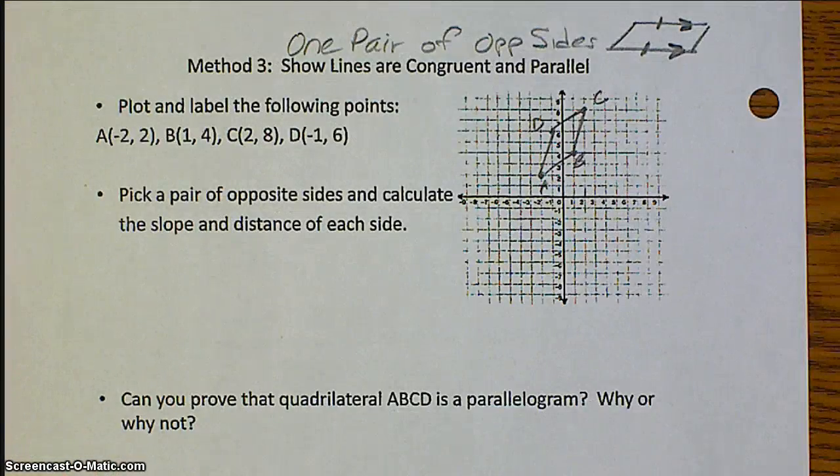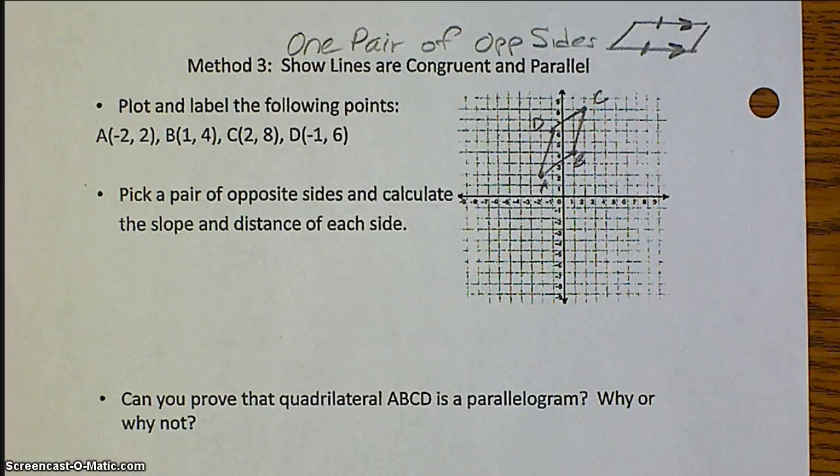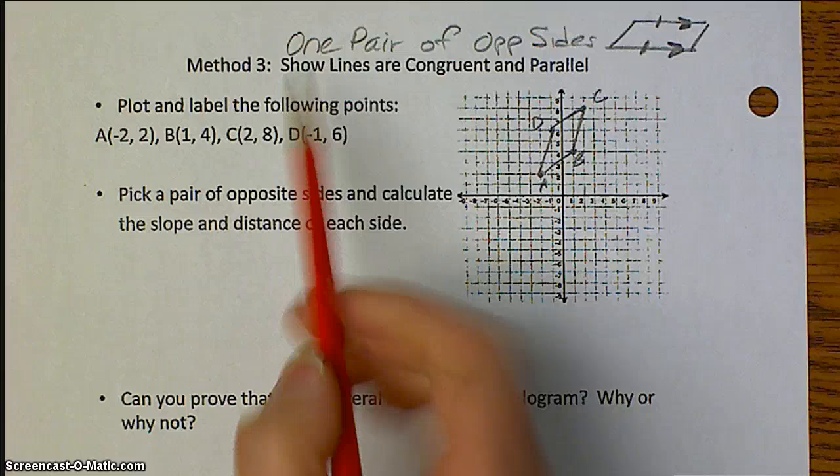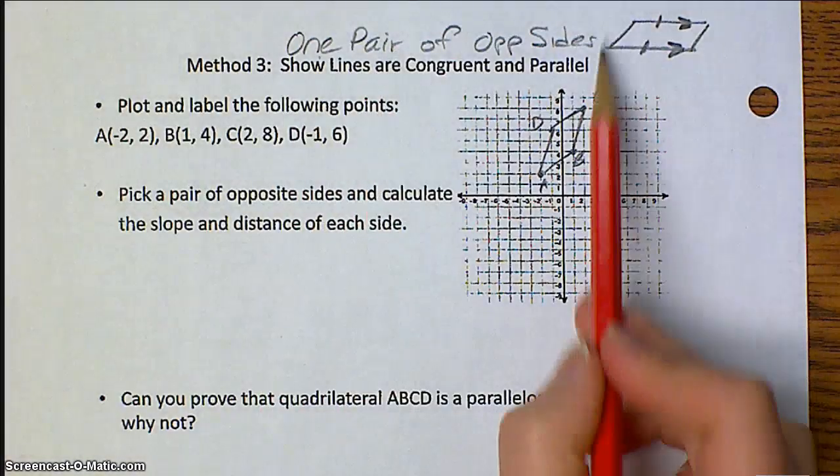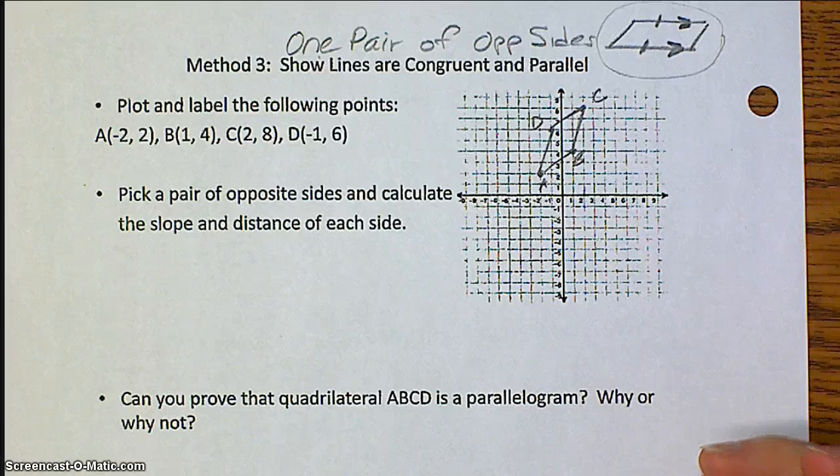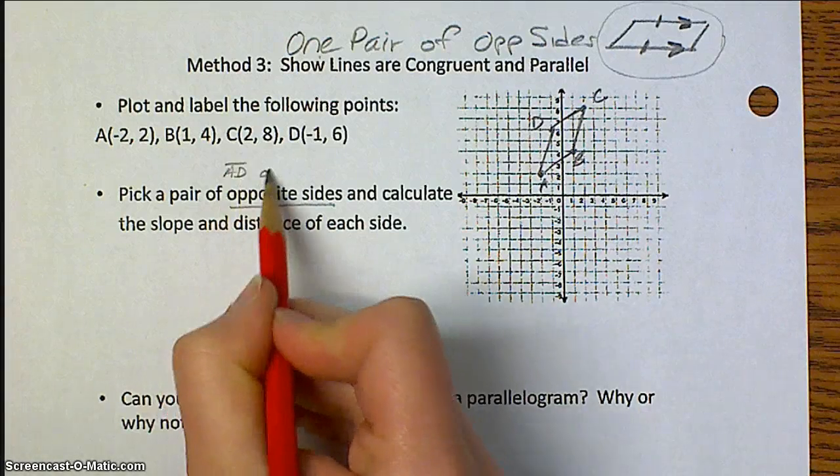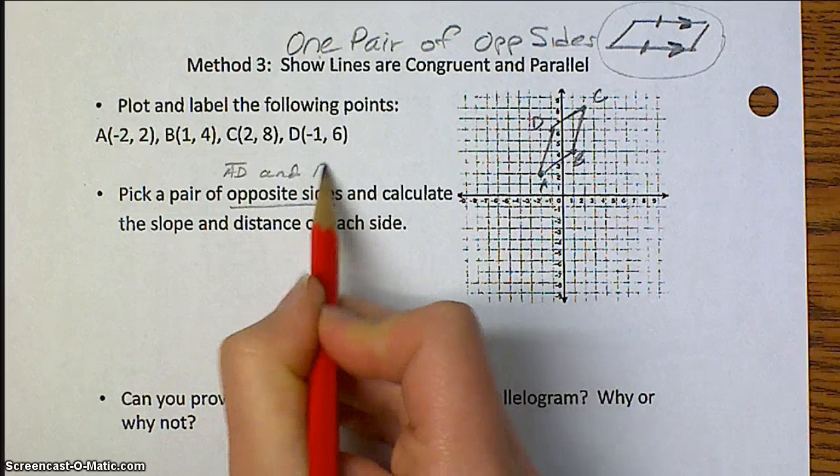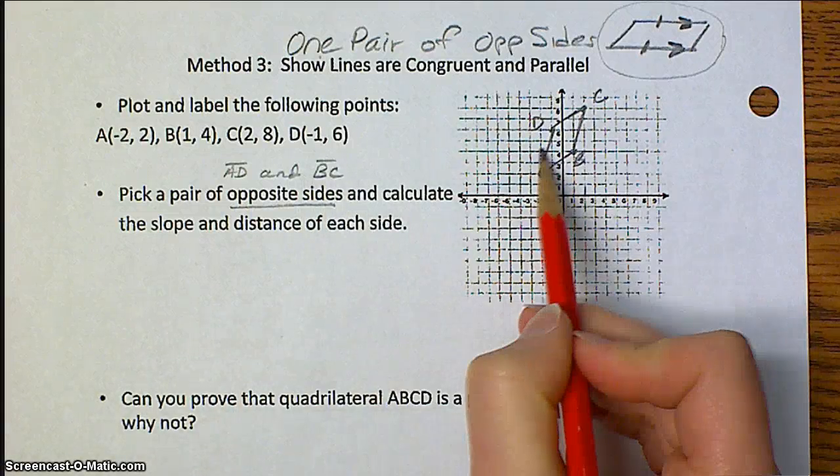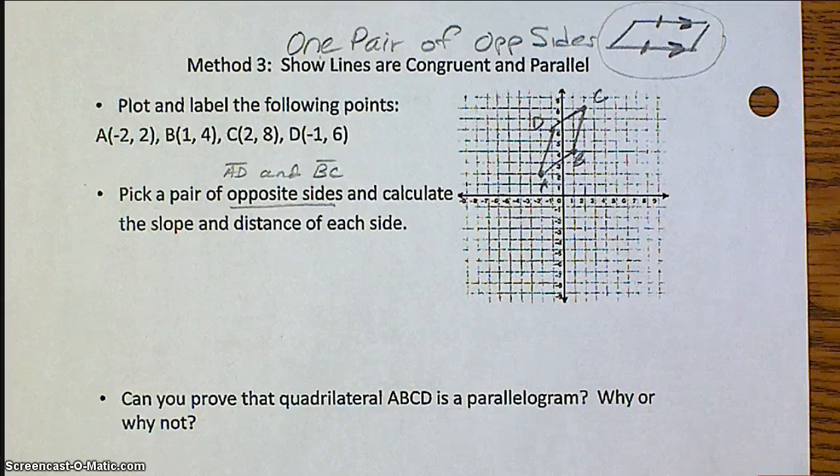Method number three is showing that lines are congruent and parallel. And when you do this, you want to make sure that you pick one pair of opposite sides. So essentially, this is what we're looking for: one pair of opposite sides that are the same length, but also they're parallel. So the first step is to pick a pair of opposite sides. I will choose AD and BC. So that would be these opposite sides here. If you wanted to choose CD and AB, then you can, as long as you choose sides that are opposite.